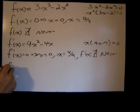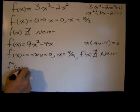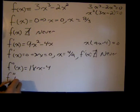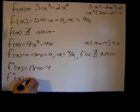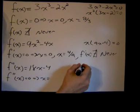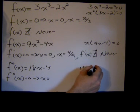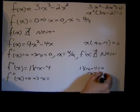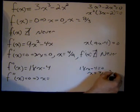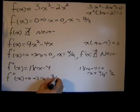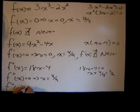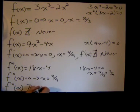So finally we'll take the second derivative. f''(x) = 18x - 4. f''(x) = 0 implies that 18x - 4 = 0, so x = 4/18 = 2/9. x = 2/9 is the only value. And again, it's a polynomial function, so the second derivative is never undefined.